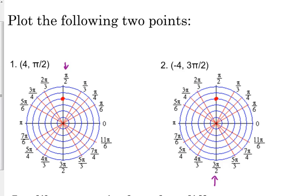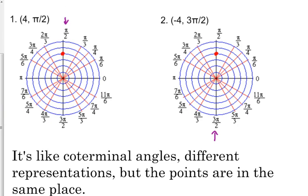They look slightly related. Looking at those, you could tell they may have something in common because they're over the same denominator and they have the same radius, just opposite signs. You may not be able to tell right off the bat that those are the same points. You can have two points that look different but actually plot to the exact same place. It's kind of like co-terminal angles — they're different representations, but the points are in the same place. Just like negative 315 and positive 45 are different angles, but really they're the exact same angle.